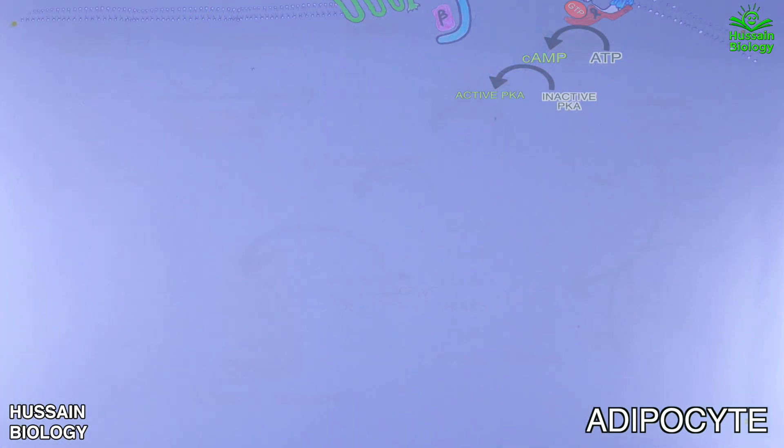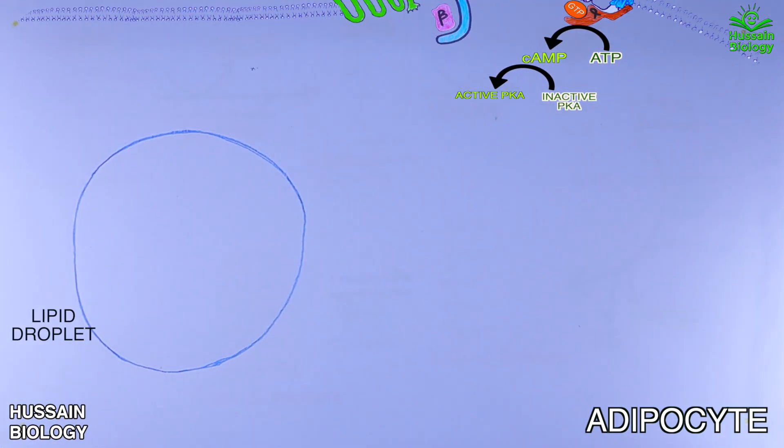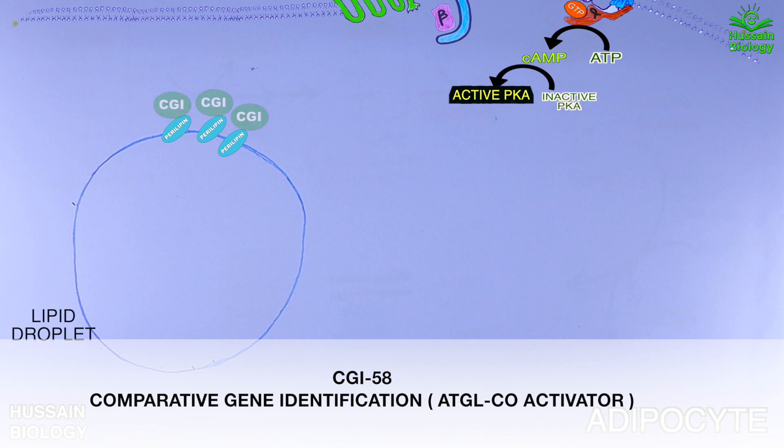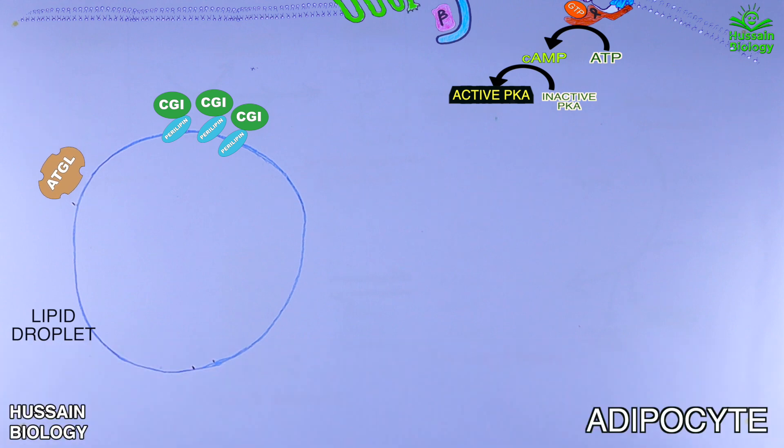On the other hand we have the lipid droplet in the adipocyte. It is having perilipin protein on the surface and CGI protein is bound with the perilipin. Both proteins are in inactive state still. On the left we have the inactive ATGL enzyme, on the bottom we have the MGL enzyme, and within the cytoplasm we have the inactive HSL enzyme.